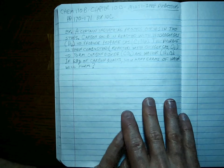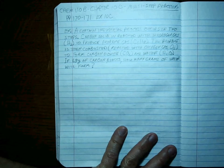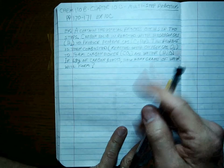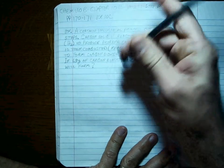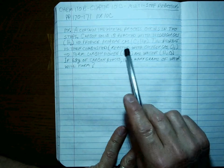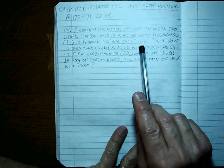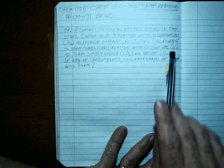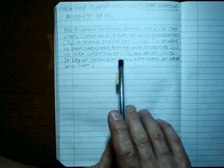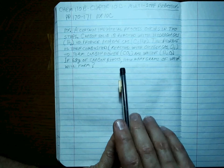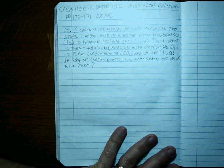A certain industrial process occurs in two steps. Carbon solid is reacted with hydrogen gas, H2, to produce propane gas, C3H8. The propane is then combusted, which means reacted with oxygen gas, O2, to form carbon dioxide and water. If 68 grams of carbon reacts, how many grams of water will form?